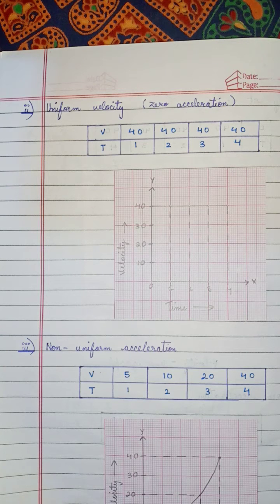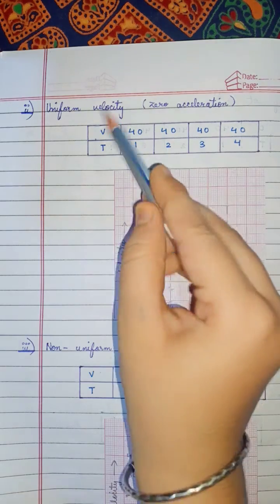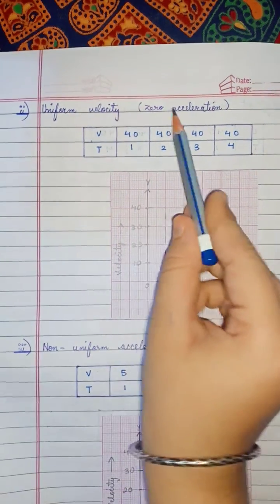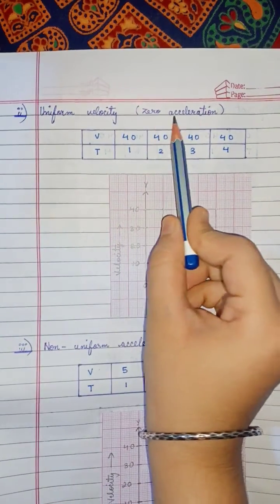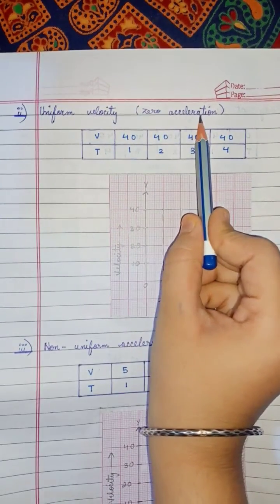Welcome back to my channel. Today in this video we are going to learn about the second situation of velocity-time graph, that is uniform velocity, which is also known as zero acceleration.